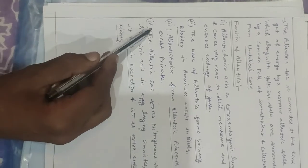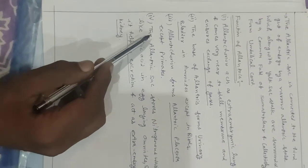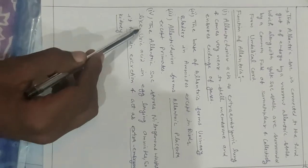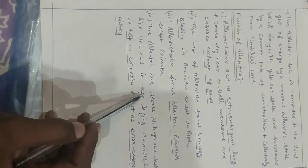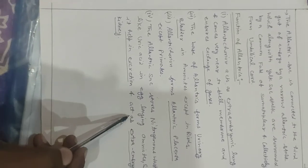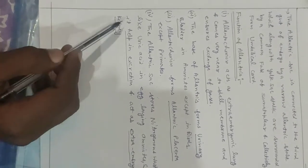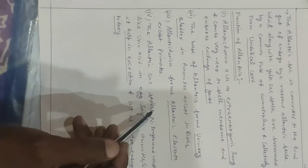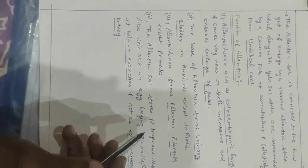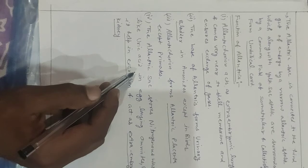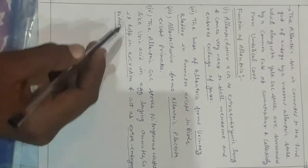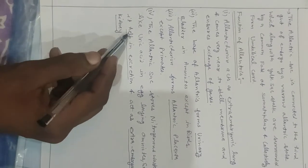The fourth function of allantois: the allantoic sac stores nitrogenous waste like uric acid in egg-laying amniotes, so it helps in excretion and acts as an extra-embryonic kidney. In summary, allantois acts as extra-embryonic kidney, lungs, urinary bladder, and forms allantoic placenta. Thank you.